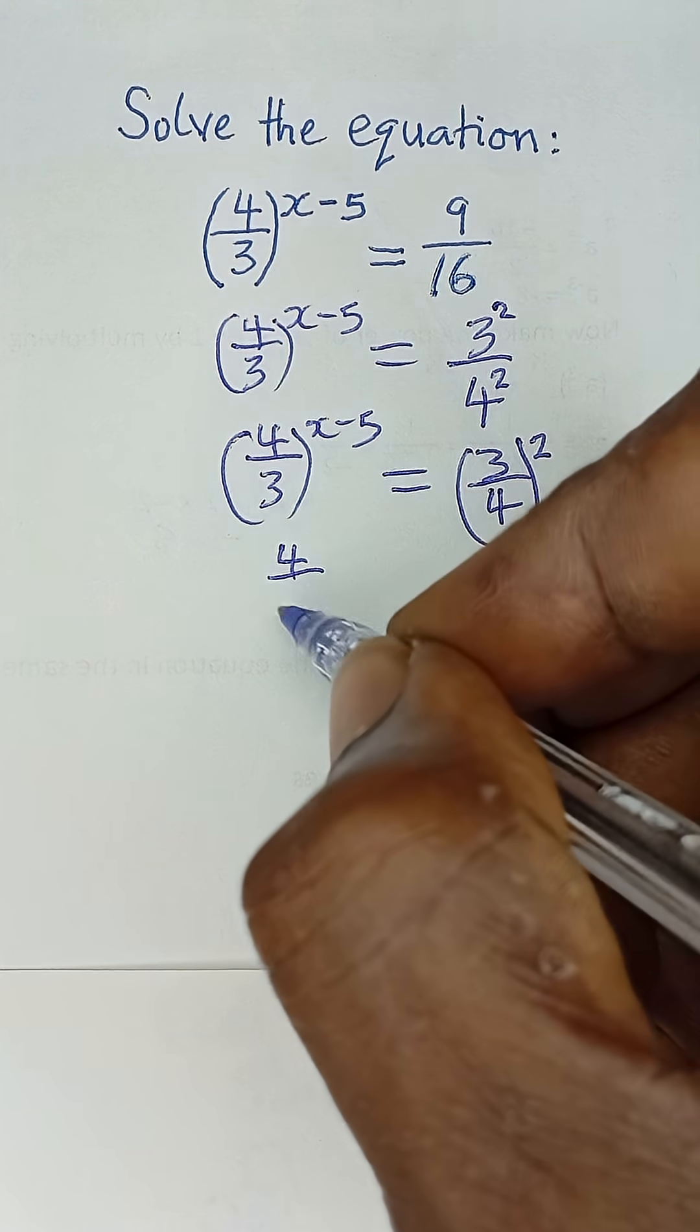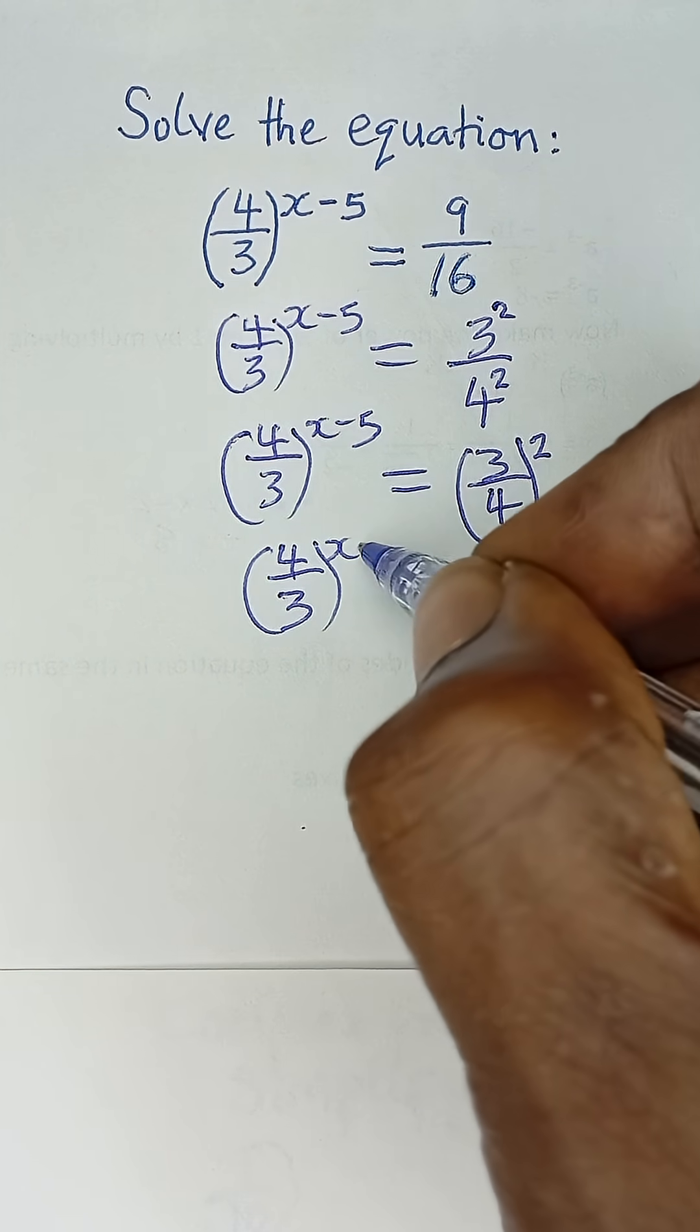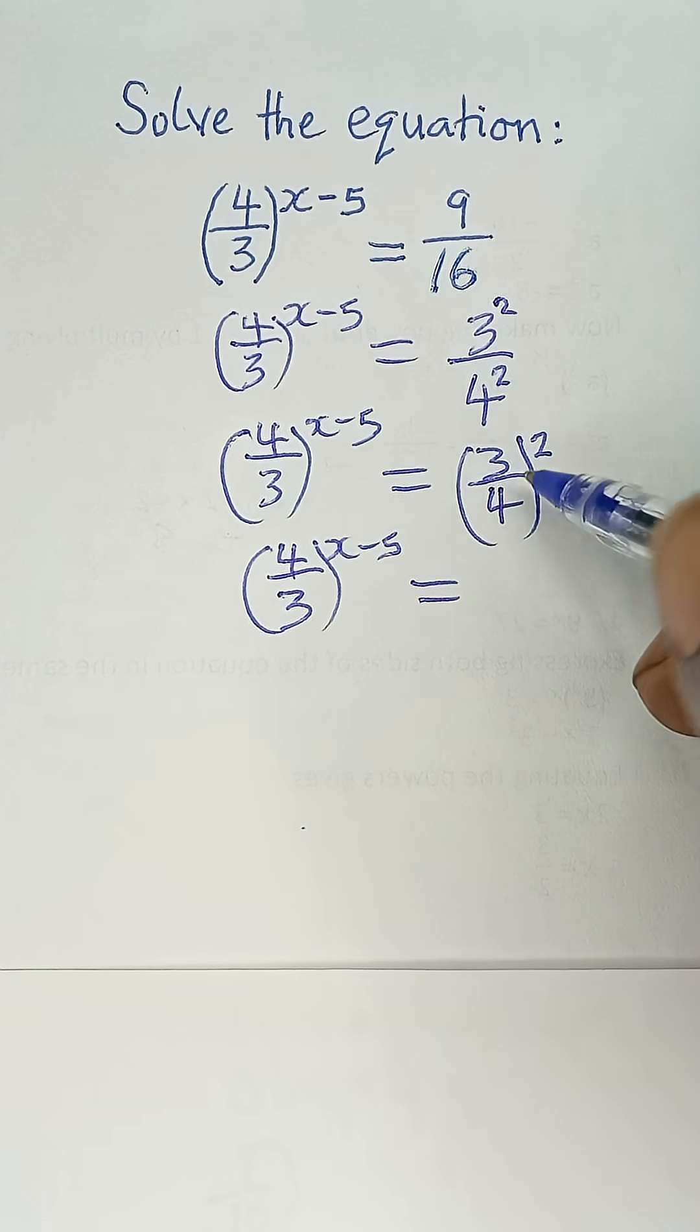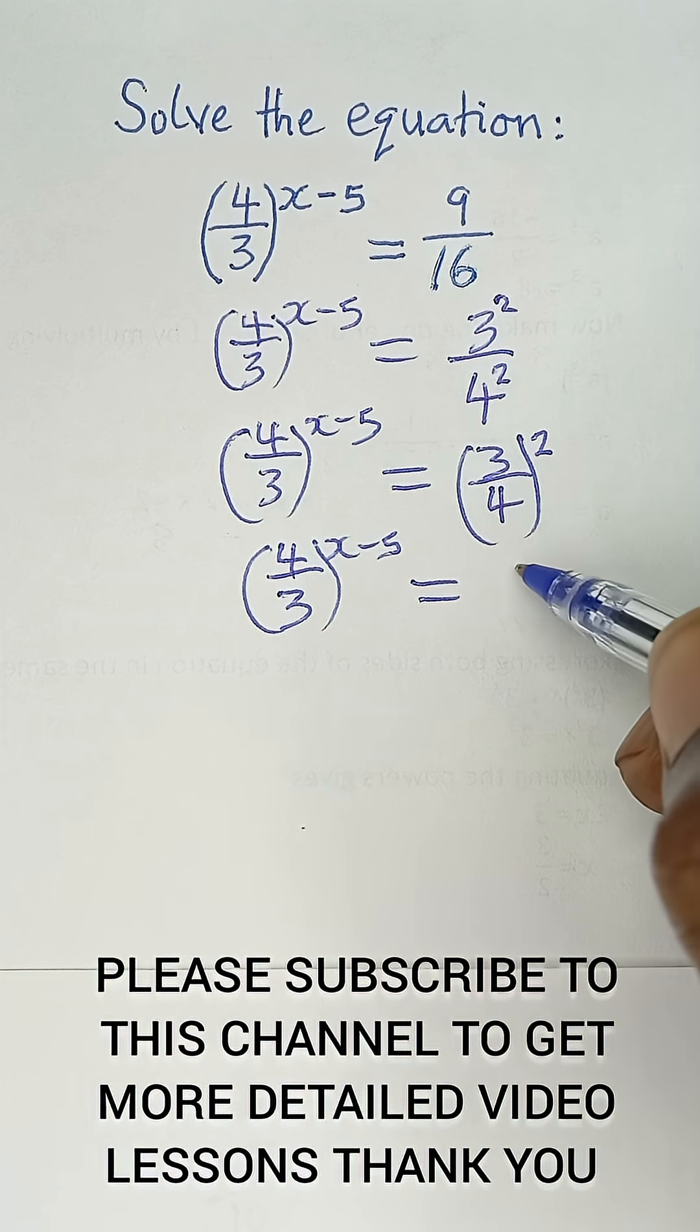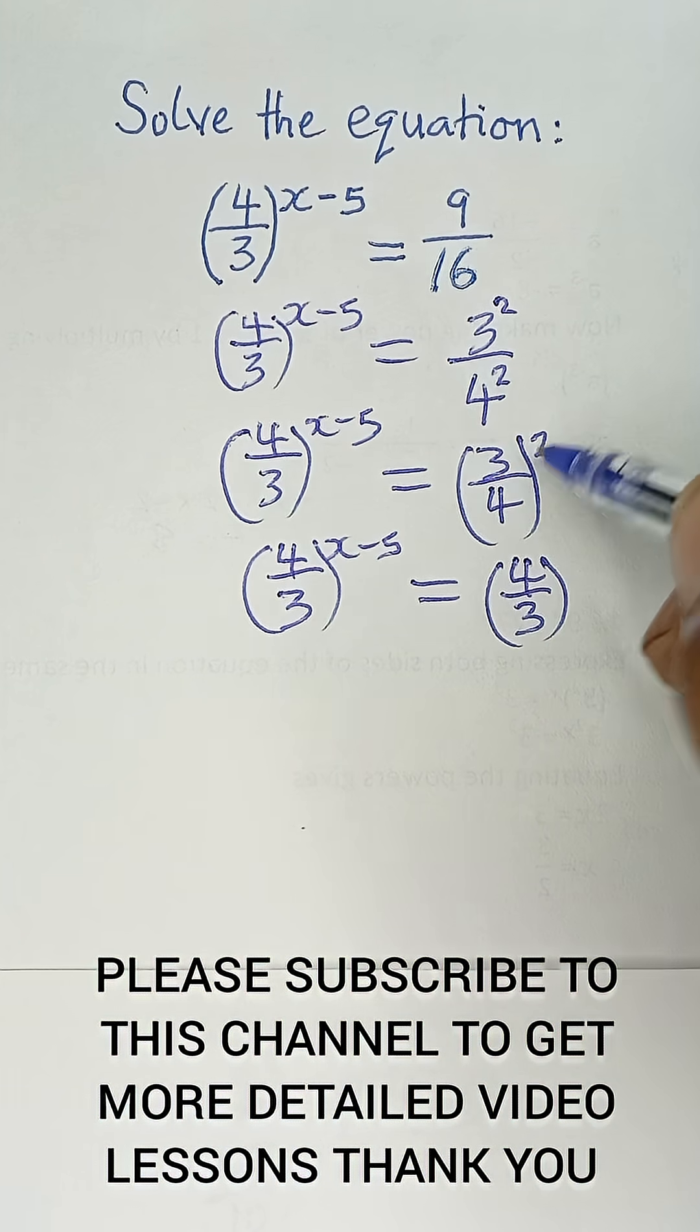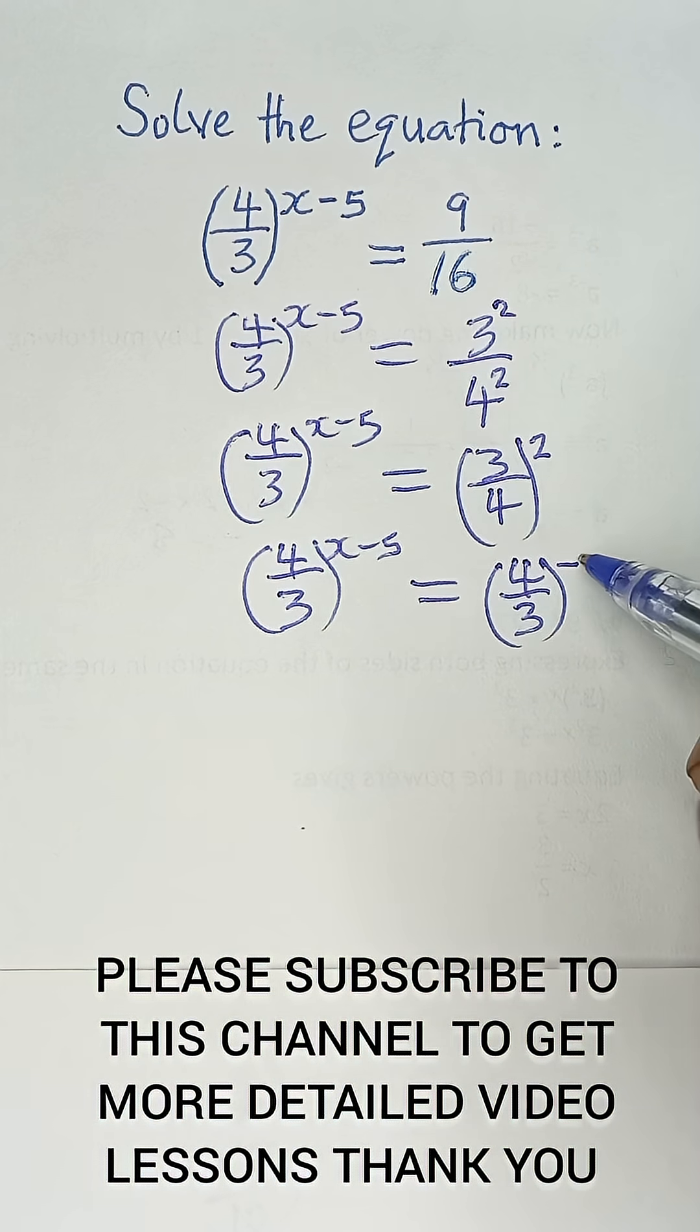We can also write this as 4 over 3 all raised to the power x minus 5 is equal to... Now, in indices, when you flip the fraction inside this bracket, you can simply change the sign of this power. So, if we take this 4 up and bring 3 down to give us 4 over 3, then we change the sign of this power. Since this is positive, it becomes negative 2.